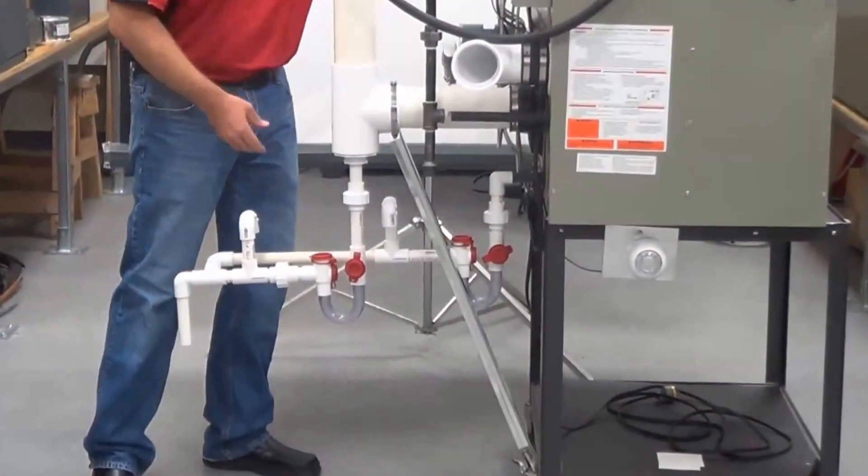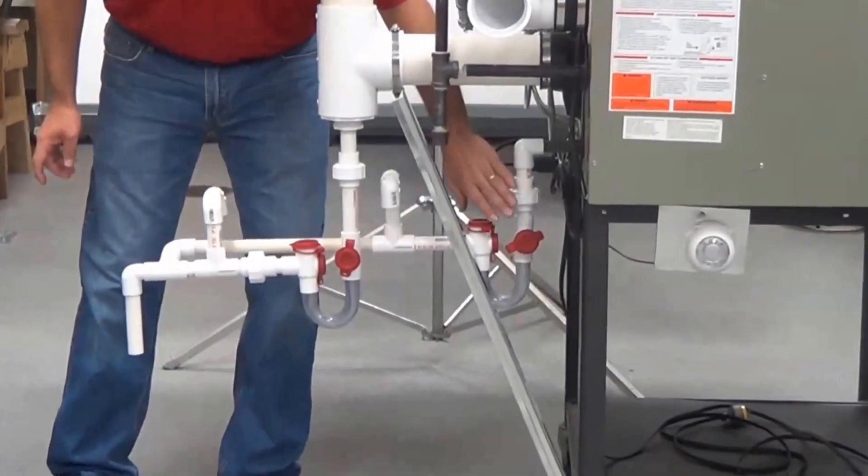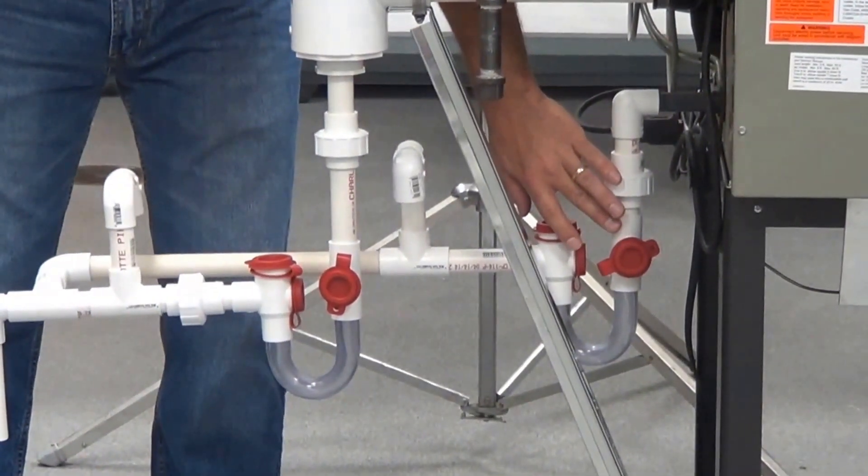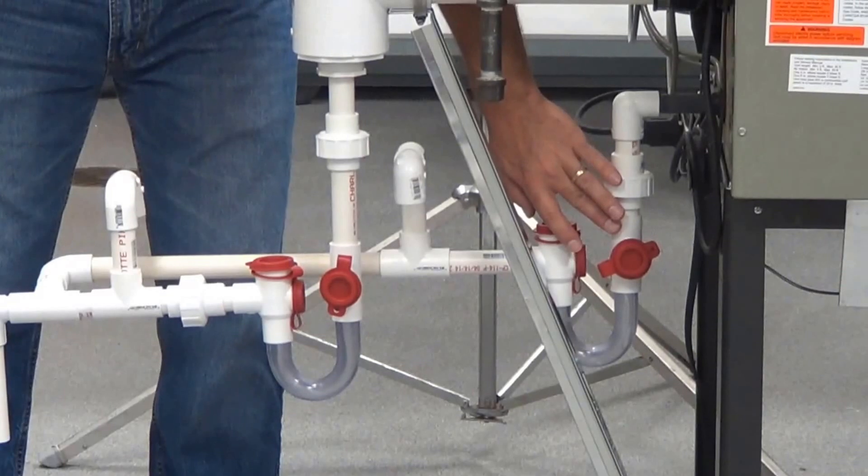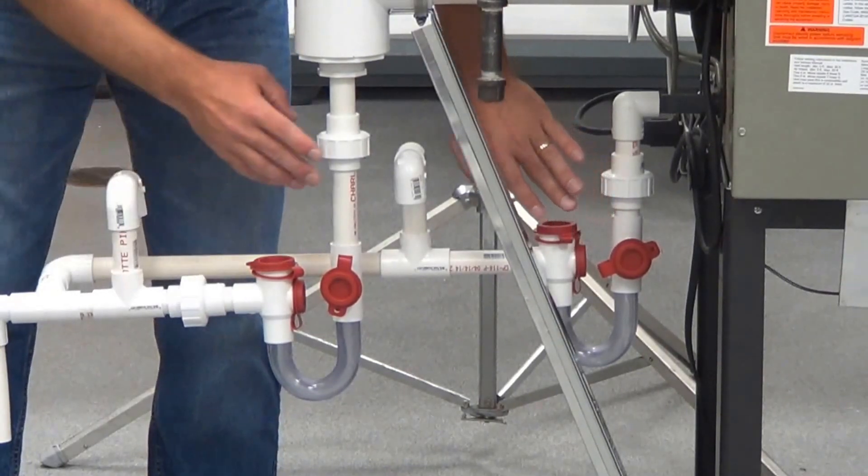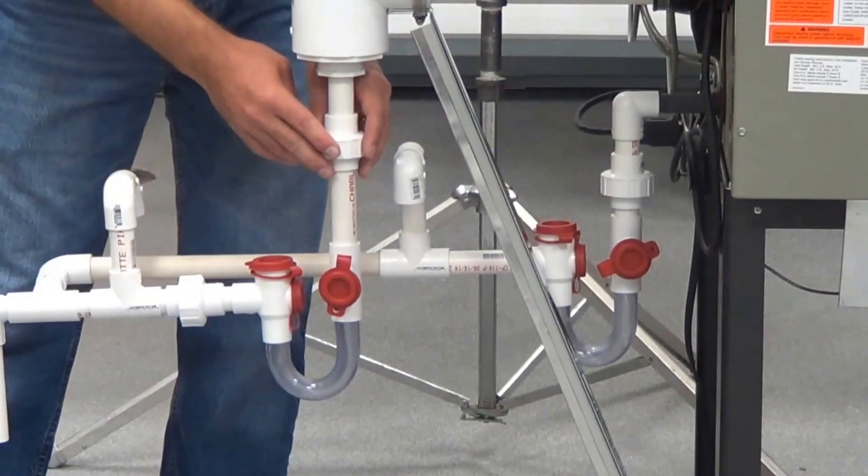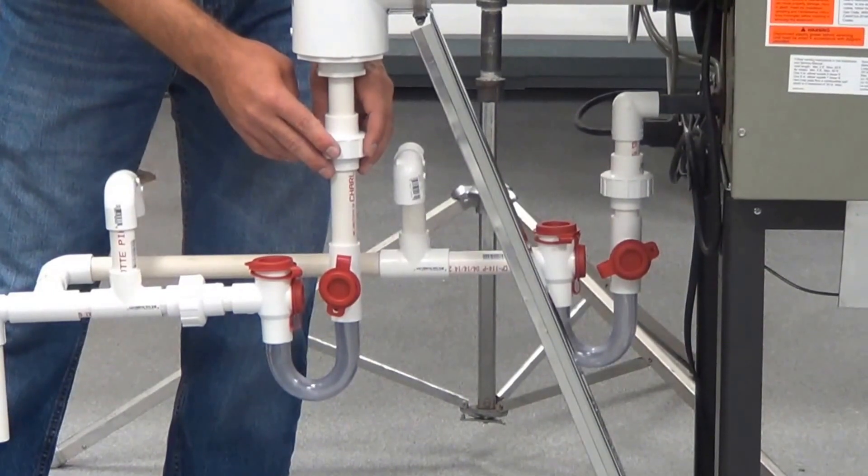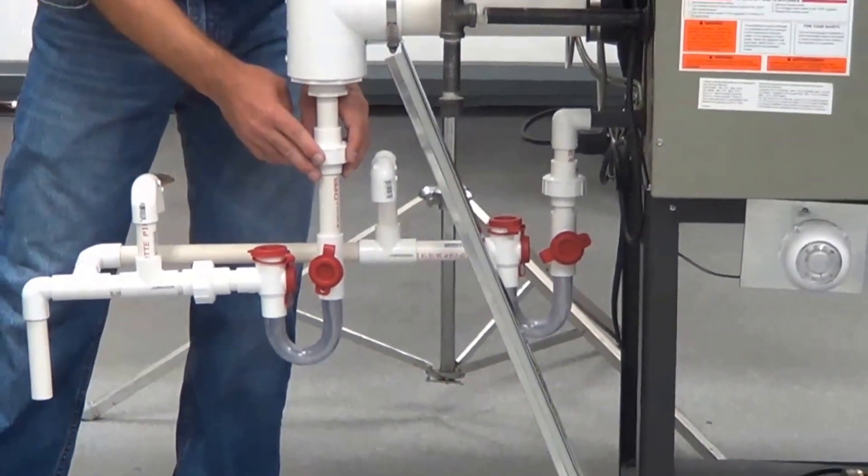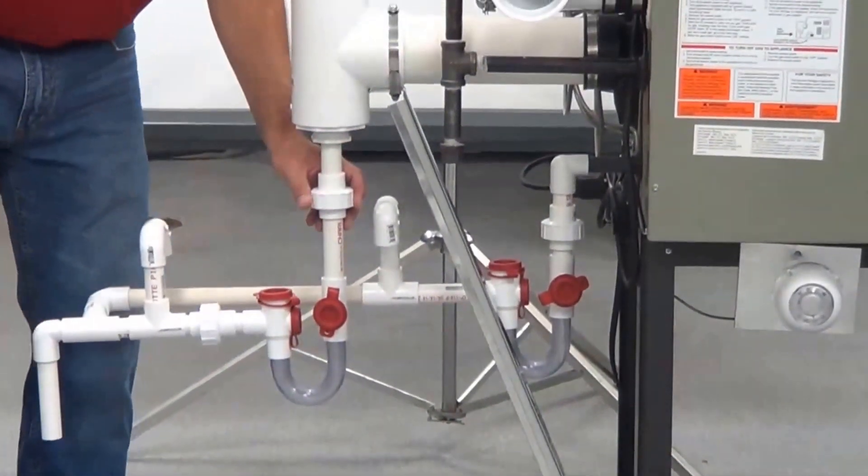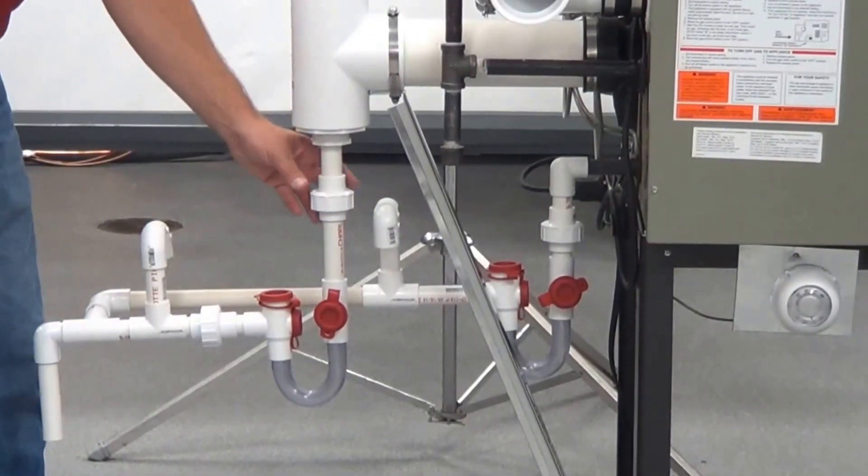So what we have here is we have a condensate from the lower side, which is from our secondary heat exchanger. And we also have a condensate from the vent pipe. So it's critical that you install both condensate traps, one on the secondary drain side and one on the venting side.